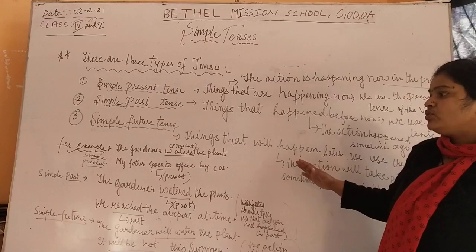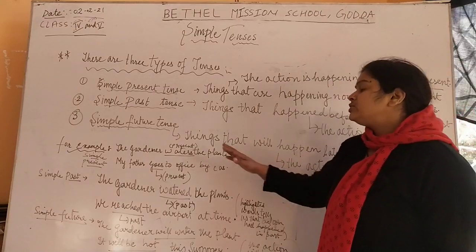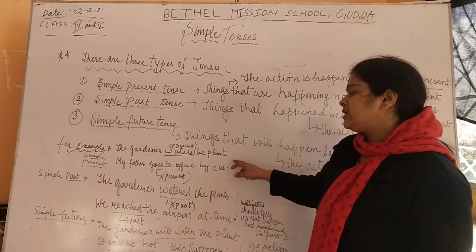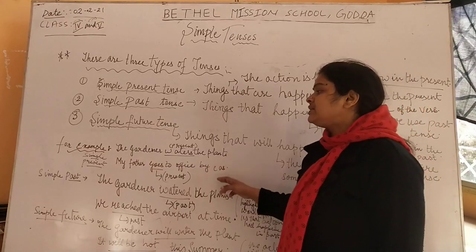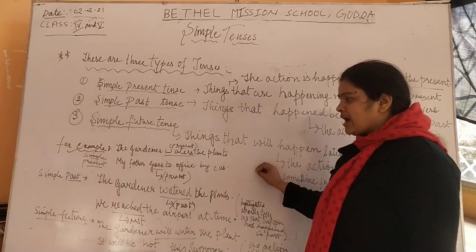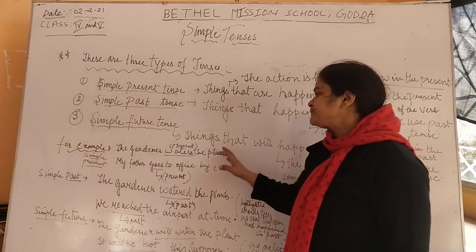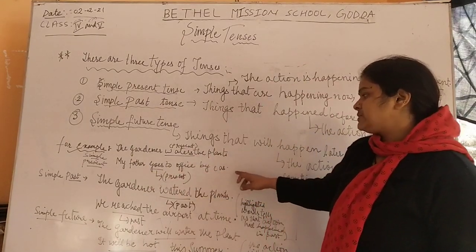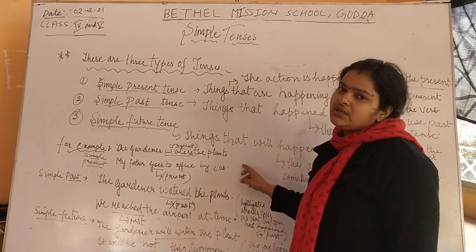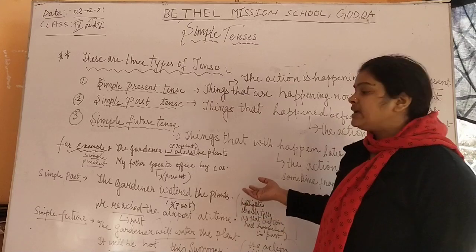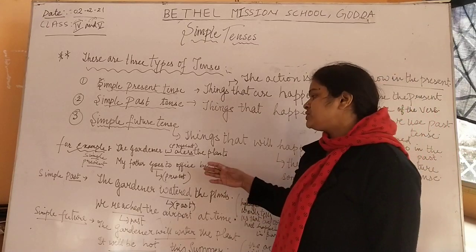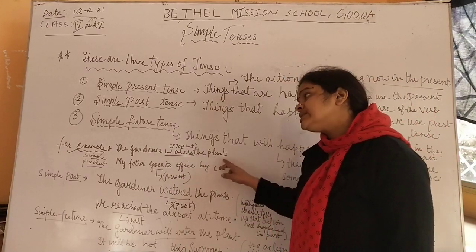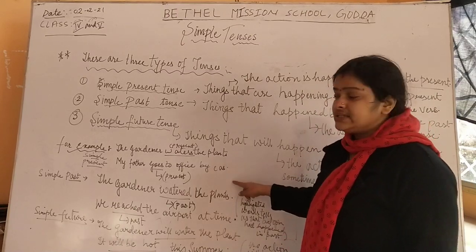We will get to know by some examples. The gardener waters the plant — that means the gardener everyday waters the plant, which is present tense. My father goes to office by car — regularly my father goes to the office by car, which shows the simple present tense. The highlighted word shows the simple present tense used in the sentence.